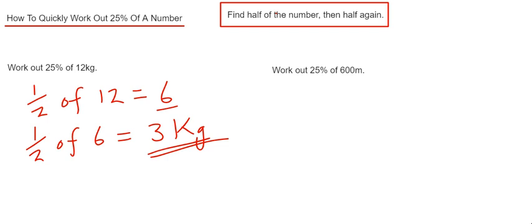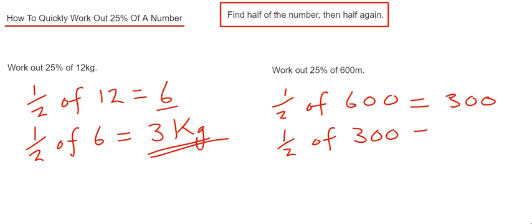We've got to work out 25% of 600 meters. So we just need to do a half of 600, which is 300. And then we need to half this new answer, which is 150 meters.